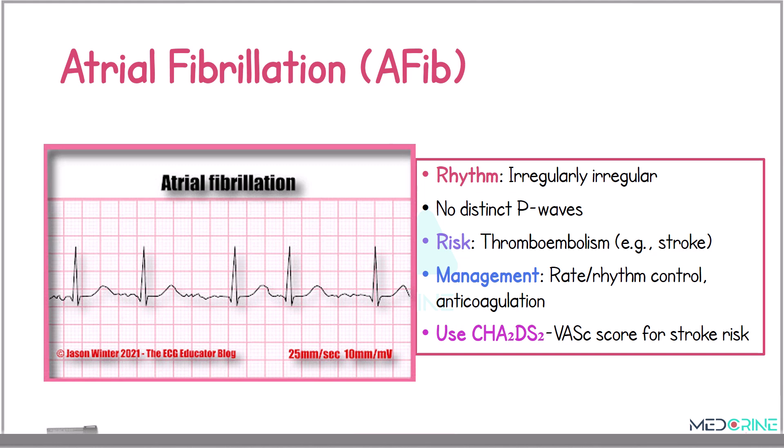The next rhythm is atrial fibrillation. Atrial fibrillation is identified by an irregularly irregular rhythm without distinct P waves. It increases the risk of thromboembolism and stroke. Management includes rate or rhythm control and the use of anticoagulation therapy.